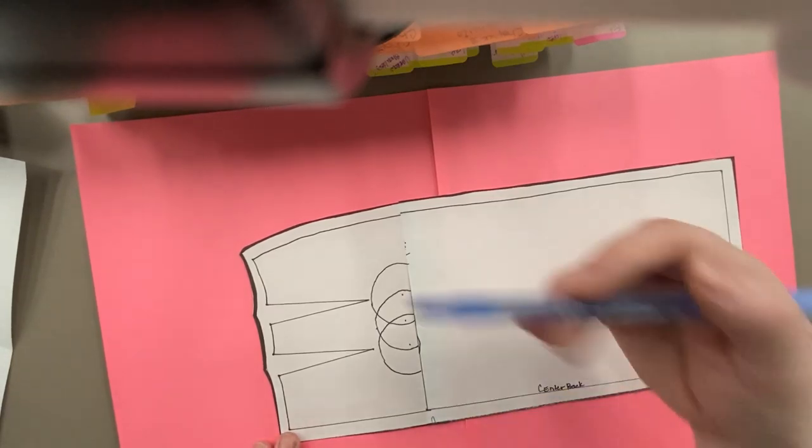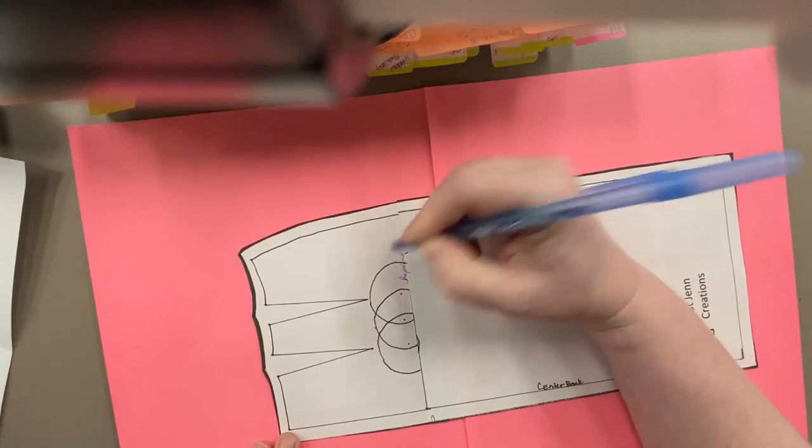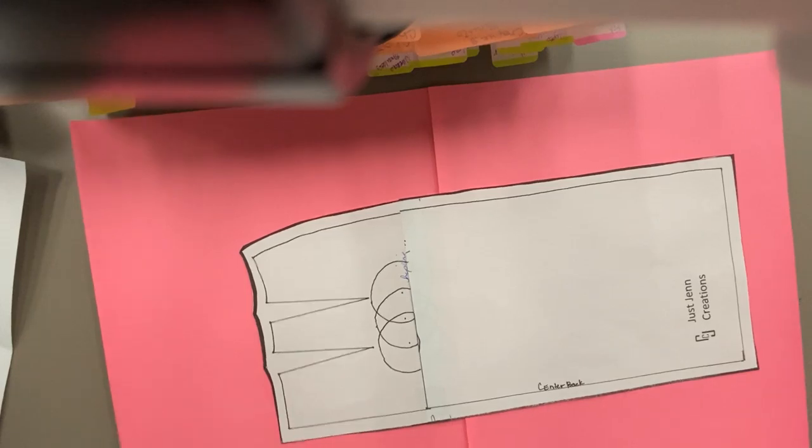So I need my hip line to be half an inch higher. So this is my new hip line. I have just overlapped it a half of an inch. And that's it. The alteration is finished.